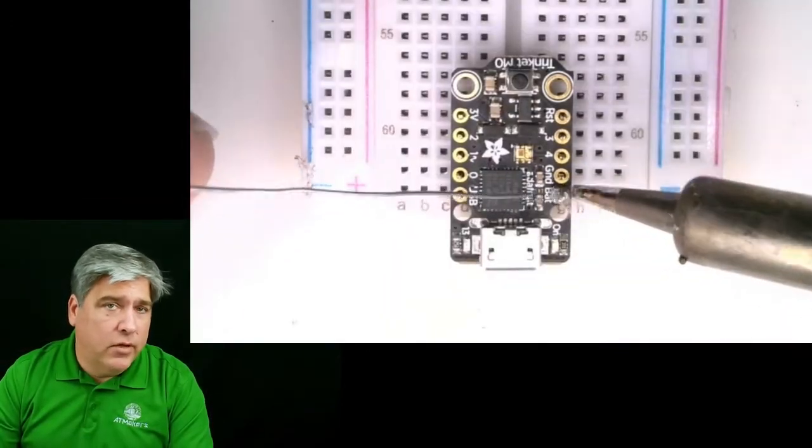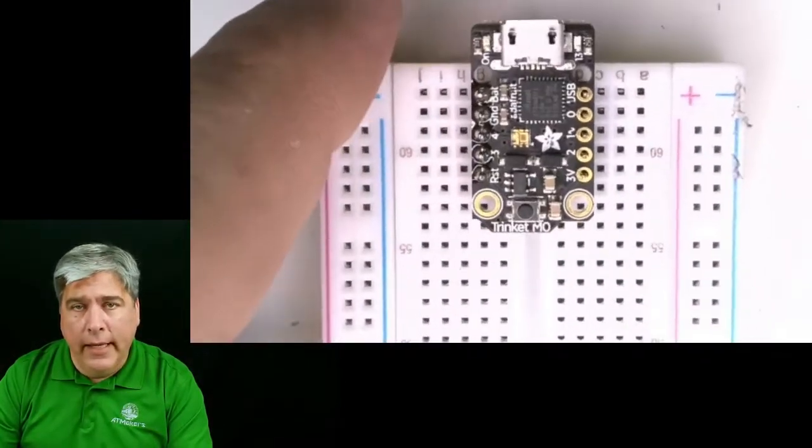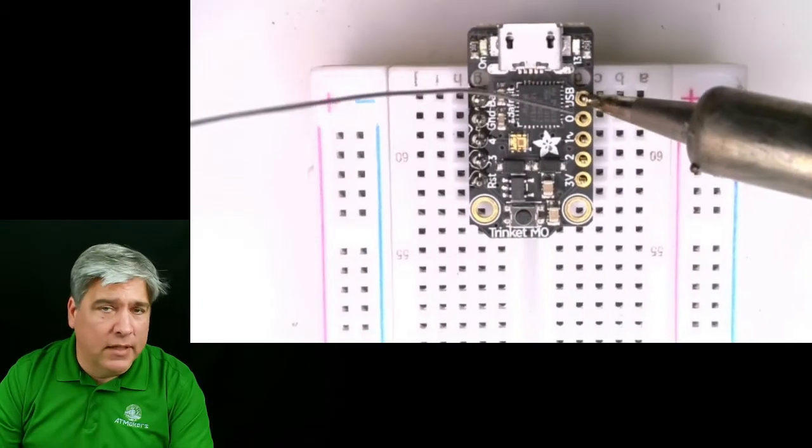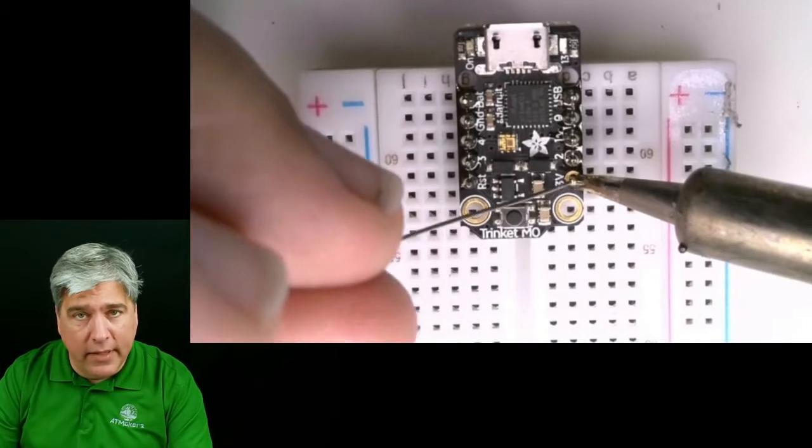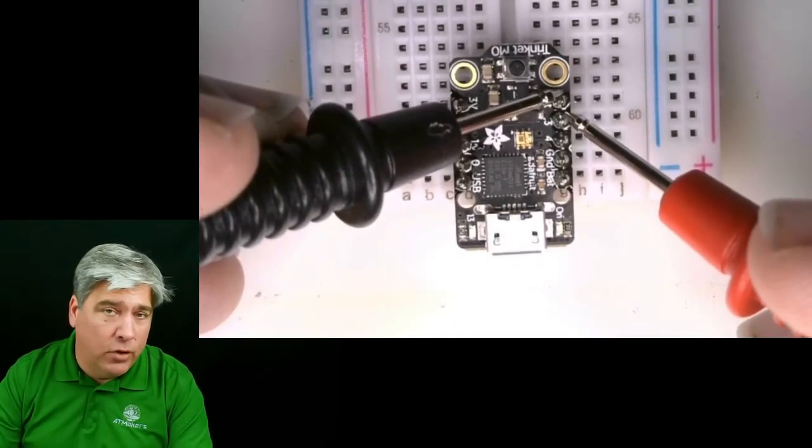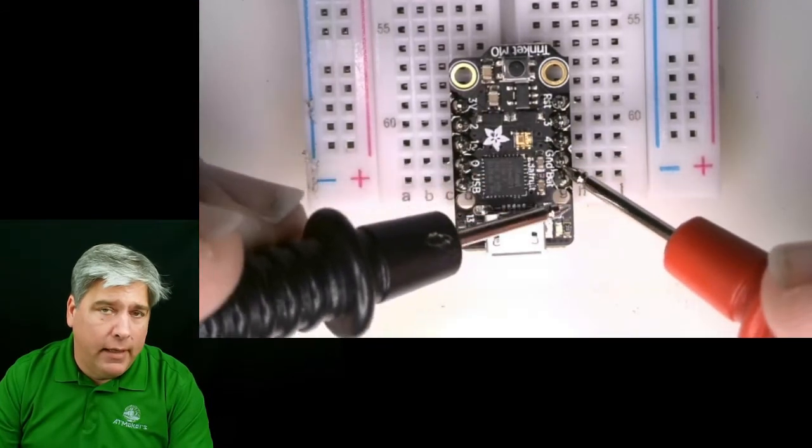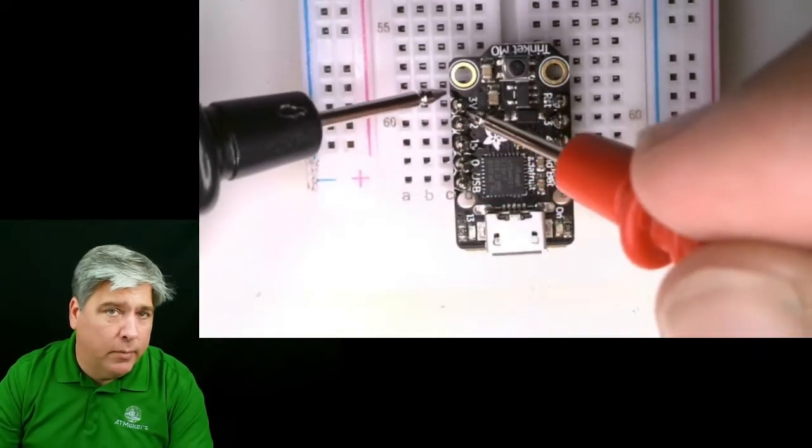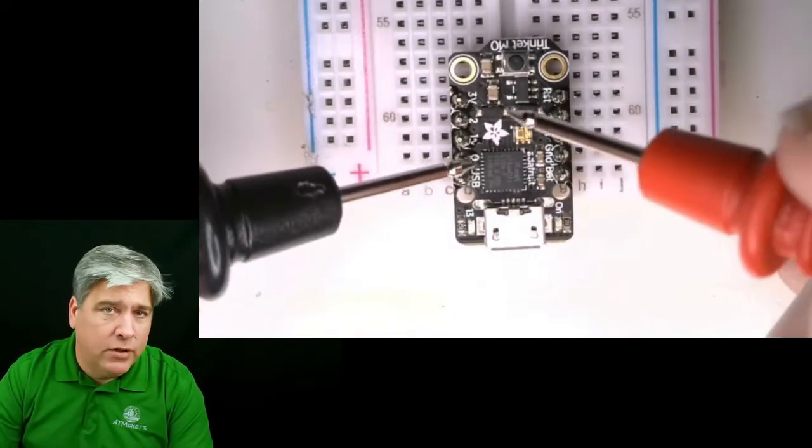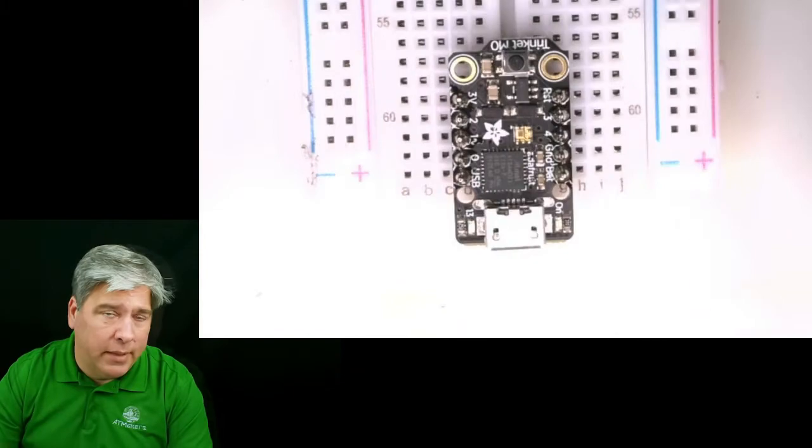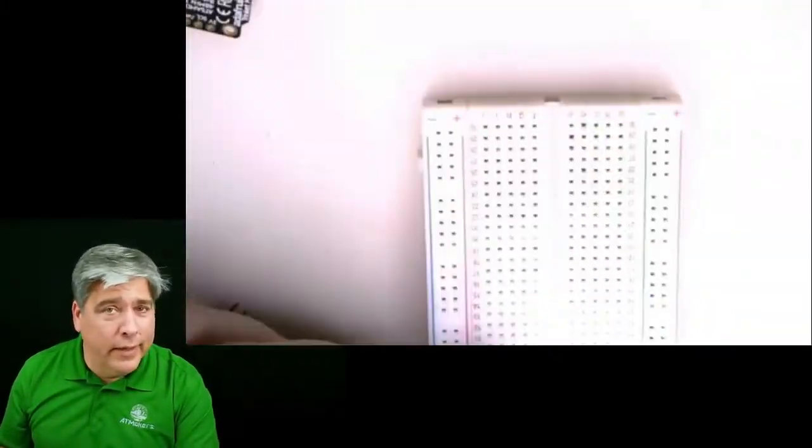And it's only 10 solder points. It should be straightforward to put the headers on it. When you get done with that, I really recommend that you go ahead, especially if you're new to this, take a continuity tester, your multimeter in continuity test mode, and go down each set of pins and make sure that there are no shorts between the pins.